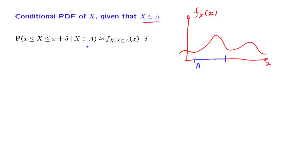Let us distinguish two cases. Suppose that x lies somewhere out here, and we want to evaluate the conditional PDF at that point. We consider a small interval from little x to little x plus delta.